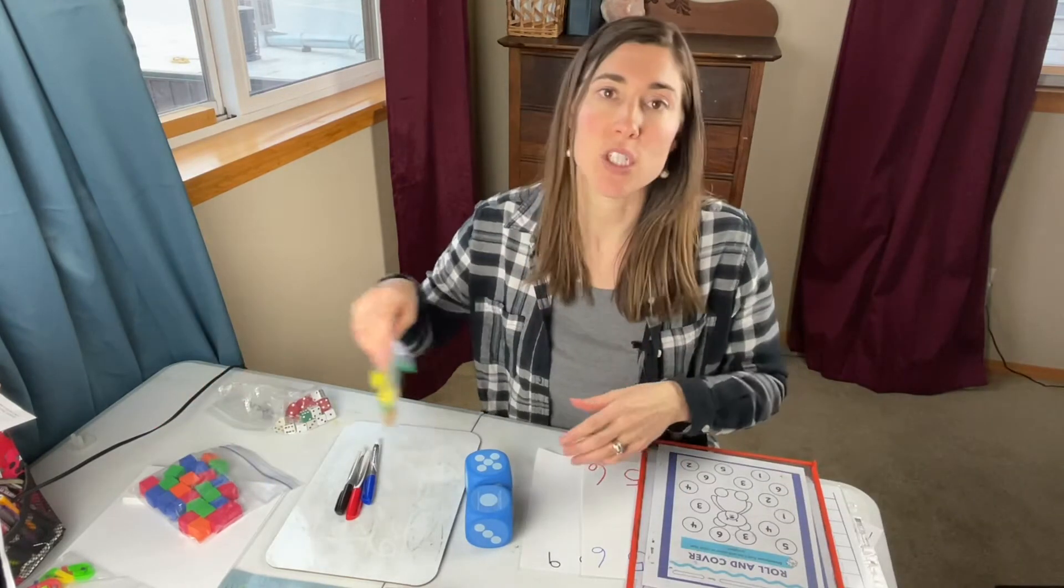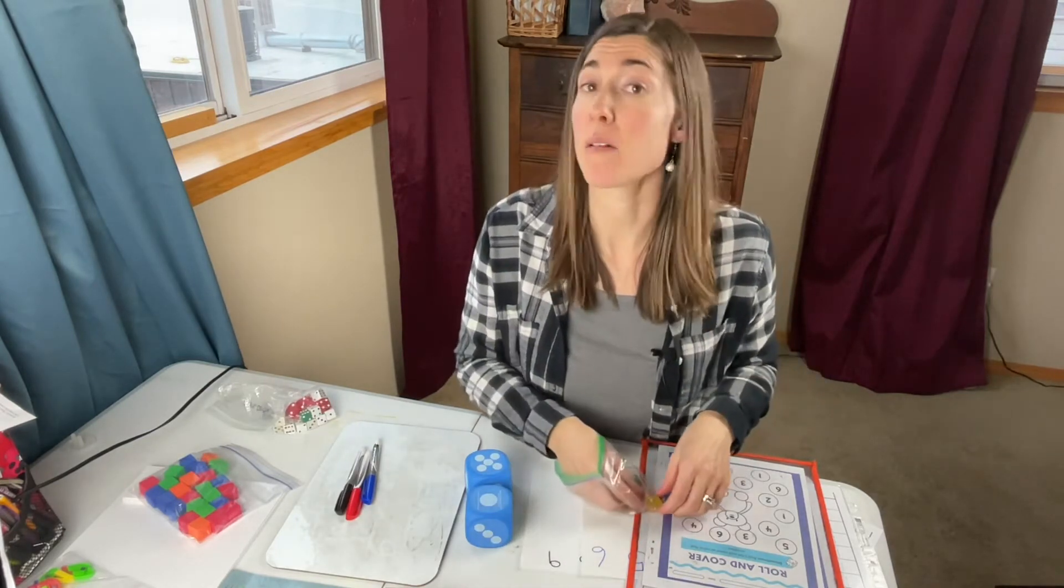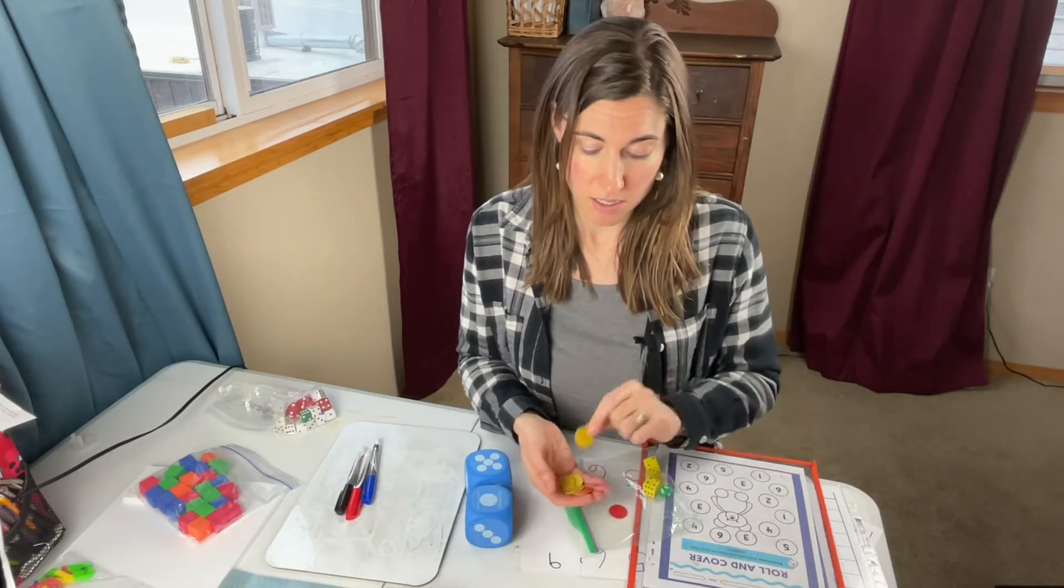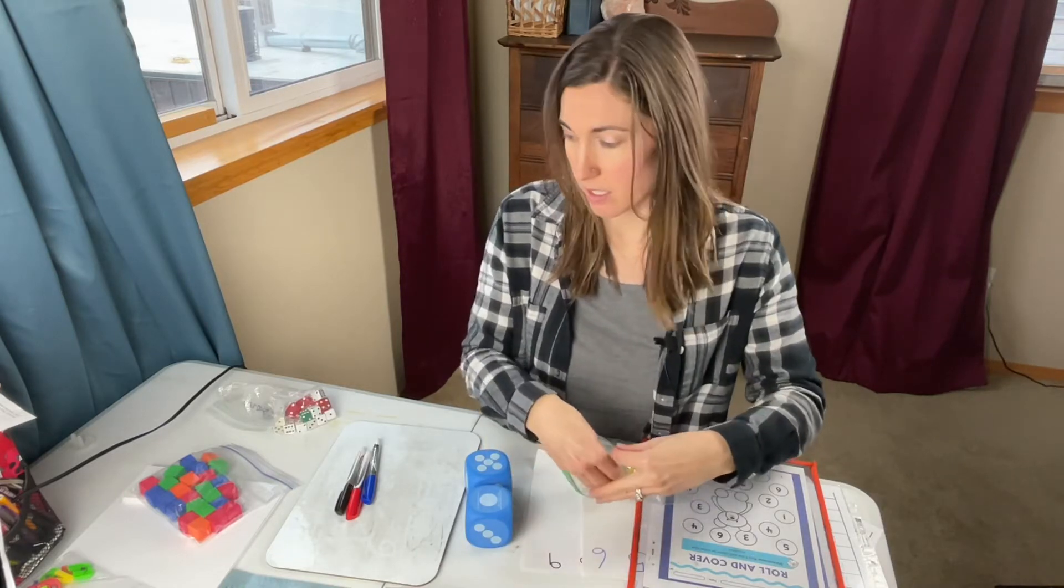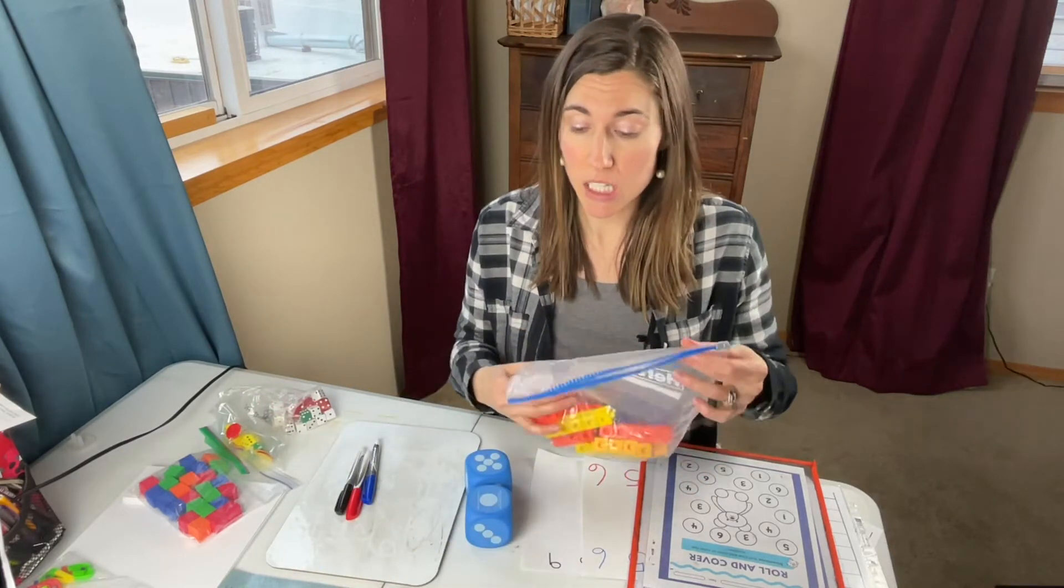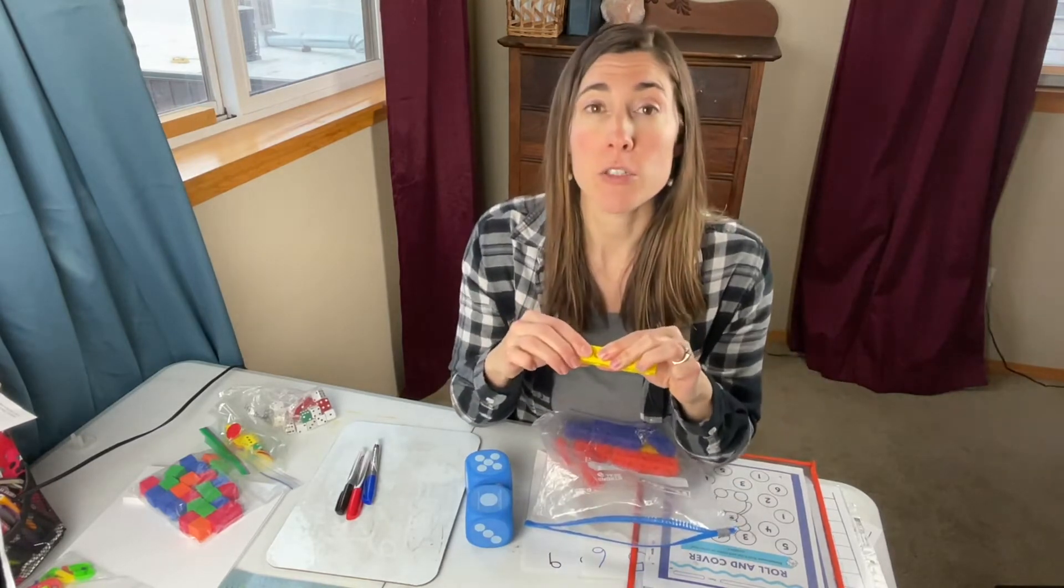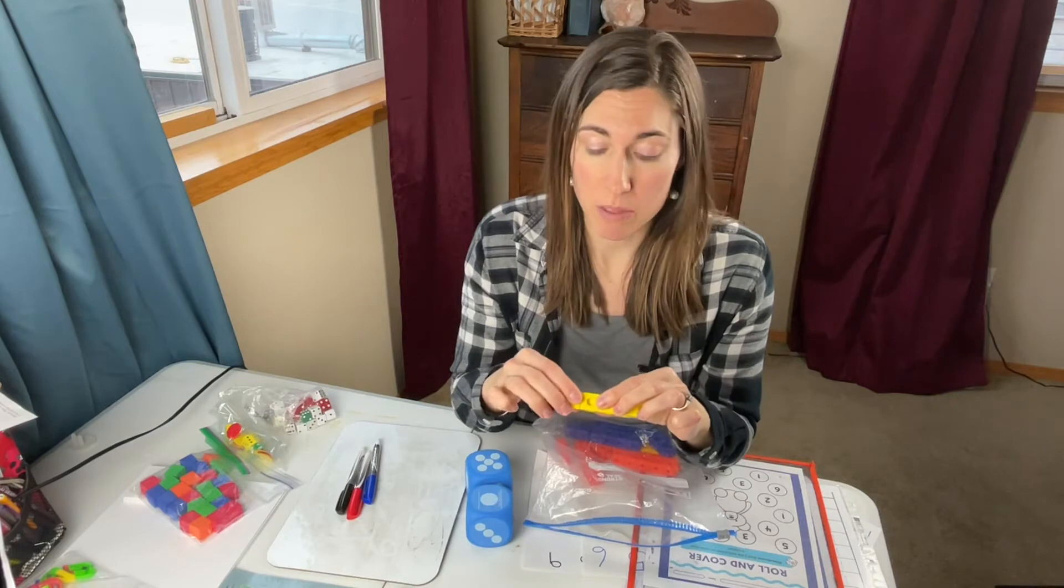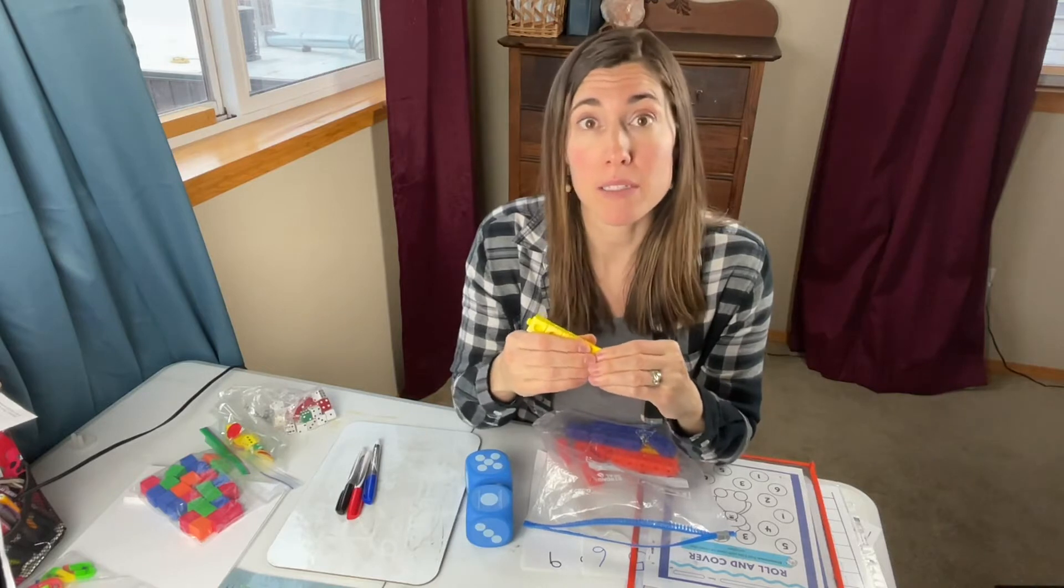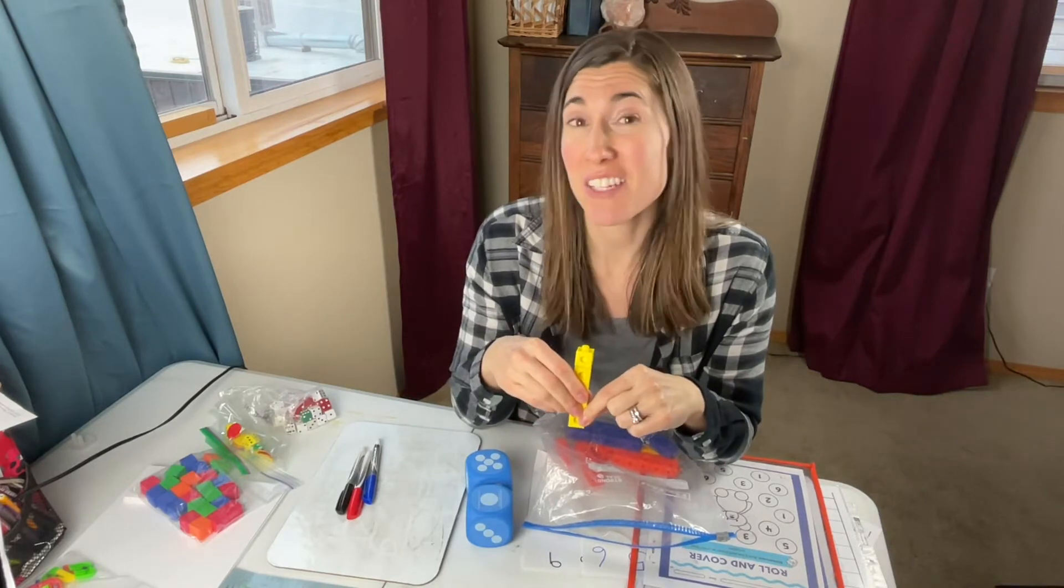Then some kind of counter or marker to cover a space. This could be anything, buttons, those little pom-pom things. These are just some counters that we had in the classroom, so those we'll be using to cover up. And then some cubes. I've had some linking cubes. There's also Unifix cubes. Again, those links will be down below. But they do work better if they connect. You could probably get by with some other ones, but the connecting part does work better because they're going to be building towers with them. So that should get us started.